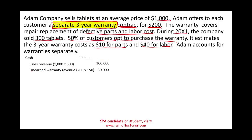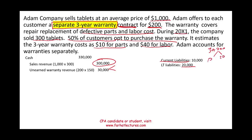How would Adam report this on the financial statements? The sales revenue goes on the income statement. As for the unearned warranty revenue of thirty thousand dollars: ten thousand is reported under current liabilities and twenty thousand is reported under long-term liabilities. Simply put, ten thousand of the unearned revenue is current and twenty thousand is long-term.